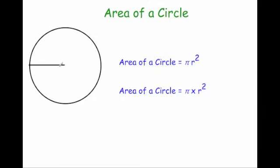So if you had a circle and you were given the radius of the circle, so the distance from the center to the edge, to find the area of the whole circle you square that value, the value of the radius, and you times it by pi. Let's have a look at an example.